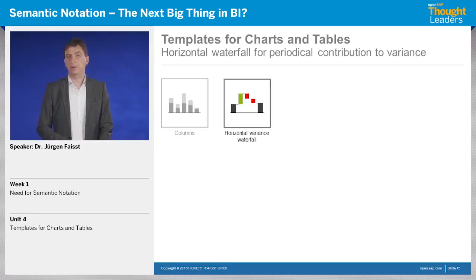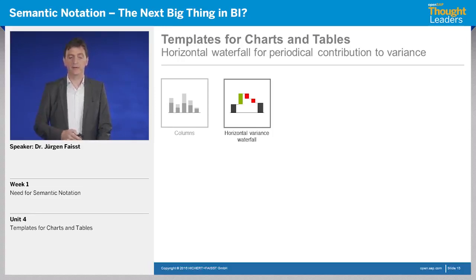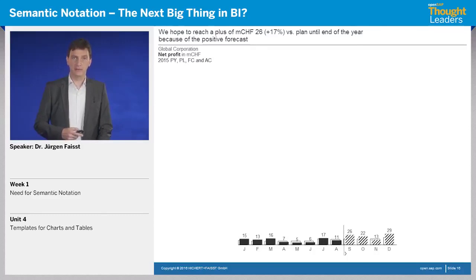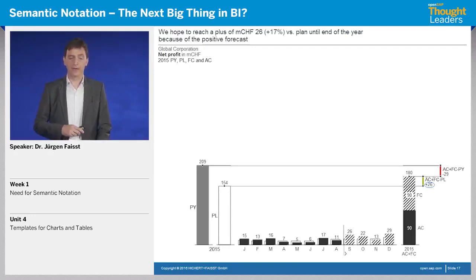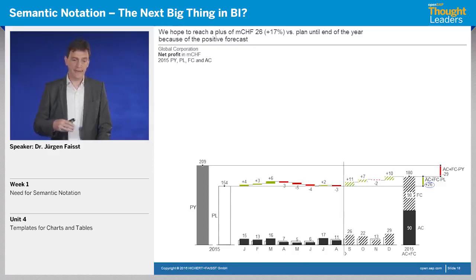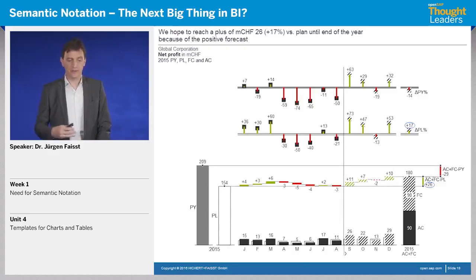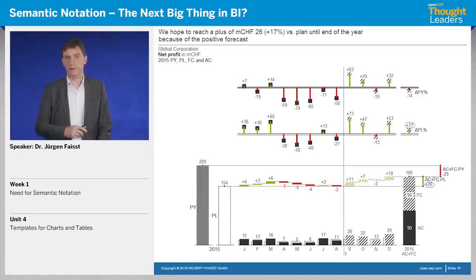Let's look at the next chart type: waterfalls. Waterfalls are a very powerful instrument to visualize business facts. We start with the columns — actual data in black or dark grey, forecast data hatched — and then we add plan and previous year. We calculate the variance to plan and previous year and highlight it, standardized of course. On the next layer, we add the variances. Here we add percentage variances. As Rolf Hichert showed in the last unit, we show relative variances as pins.